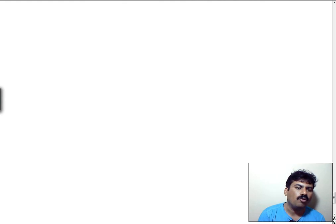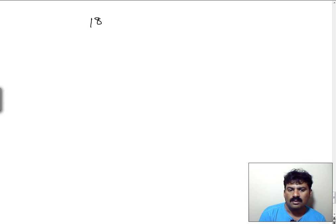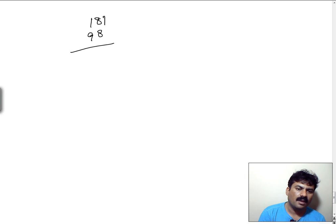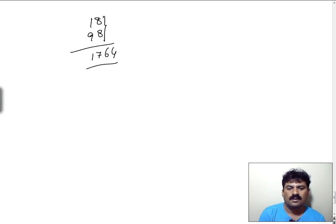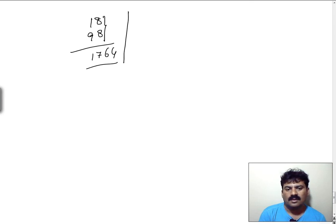One more simple example: 18 into 98. Simply, 8 into 8 is 64. And 1 into 9 plus 8 — that is 9 plus 8 equals 17. So 1764 is the answer. Within seconds we can finish this calculation. We need not struggle, but the condition must be verified.